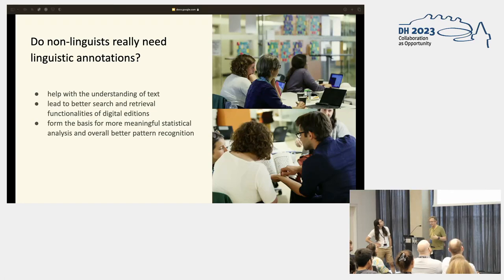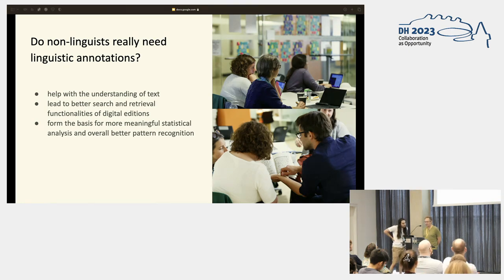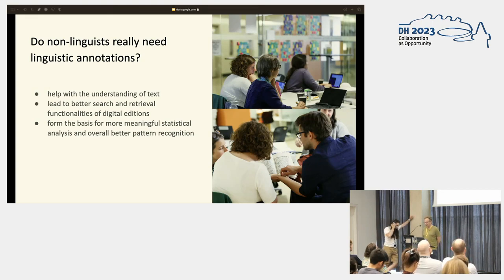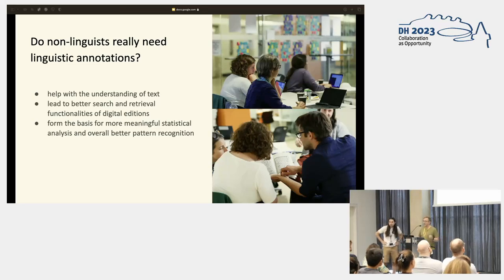Despite all that, it should be a truth universally acknowledged that linguistically annotated text can vastly improve our understanding of and engagement with any kind of text, regardless of genre or historical period. NLP methods ask us to foreground language and contemplate how we as humans read texts by having to explain our processes to machines. Linguistic annotations can lead to better search and retrieval in digital editions, more meaningful semantically informed statistical data analysis, and overall better pattern recognition in textual collections.